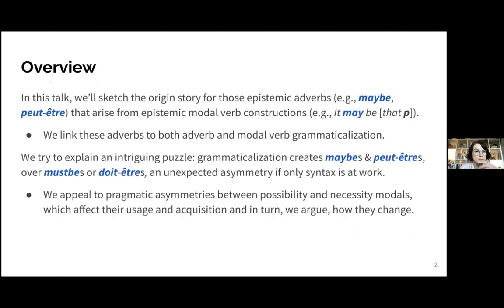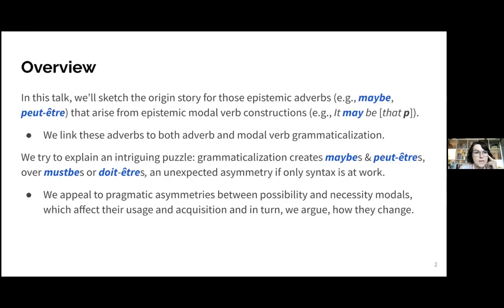When we were doing this, we discovered an interesting puzzle. This grammaticalization seems to create 'maybes' and 'peut-être', but not 'must-bes' and 'doit-être' — not these necessity modal verb constructions. This is an unexpected asymmetry if this is purely a syntactic grammaticalization. To explain this, we appeal to pragmatic asymmetries between possibility and necessity modals which affect their usage and acquisition, and we think this may play a role in this particular change.